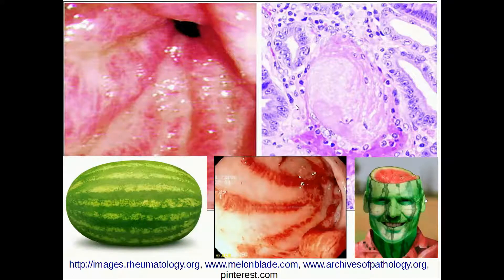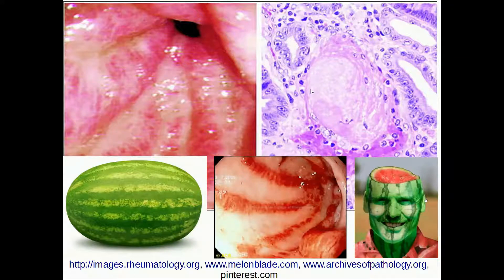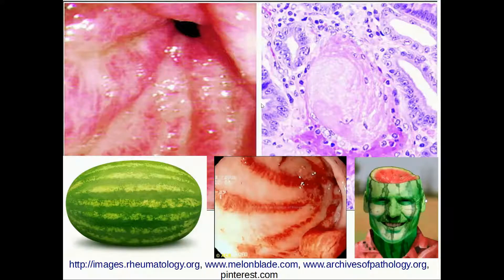Clinically, gastric antral vascular ectasia affects usually older patients and can be associated with chronic bleeding, so it is important to have this diagnosis in mind. If we want to confirm that we are looking at fibrin, we can use a special stain. That's all about gastric antral vascular ectasia — thanks for watching.